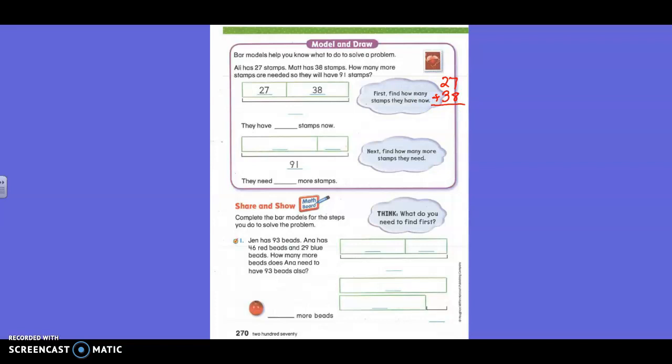27 plus 38. Figure that out. What's seven plus eight, everybody? Fifteen. Fifteen, yes, because eight plus eight is sixteen. Fifteen. Add the one. Then we have three plus two plus one. Three and two more would be five. And one more would be six. Okay. So we need to put our answer right here for 65. All right. Now we know how much they have.